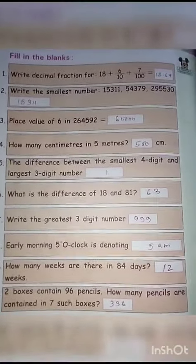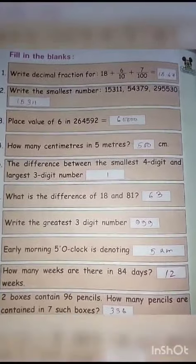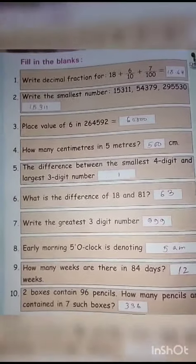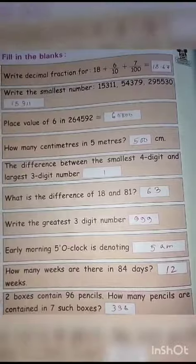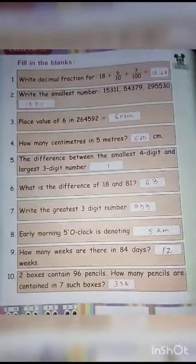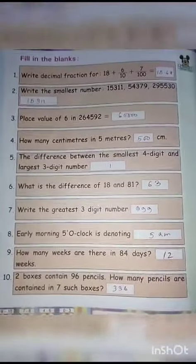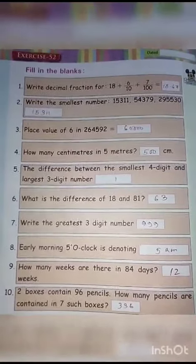18.67. Write the smallest number: 15,311, 54379, 299530. Place value of 6 in 264592: 60,000. How many centimeters in 5 meters? 500 centimeters. The difference...